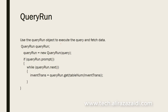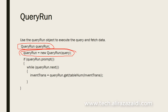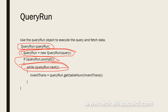First of all, the QueryRun object. The QueryRun object is used to execute the query and fetch data. If we explore the code snippet, we define the QueryRun object and provide its query reference which needs to be executed. We use its constructor and prompt this query, and while iterating with query.next() we can fetch the table from the query.